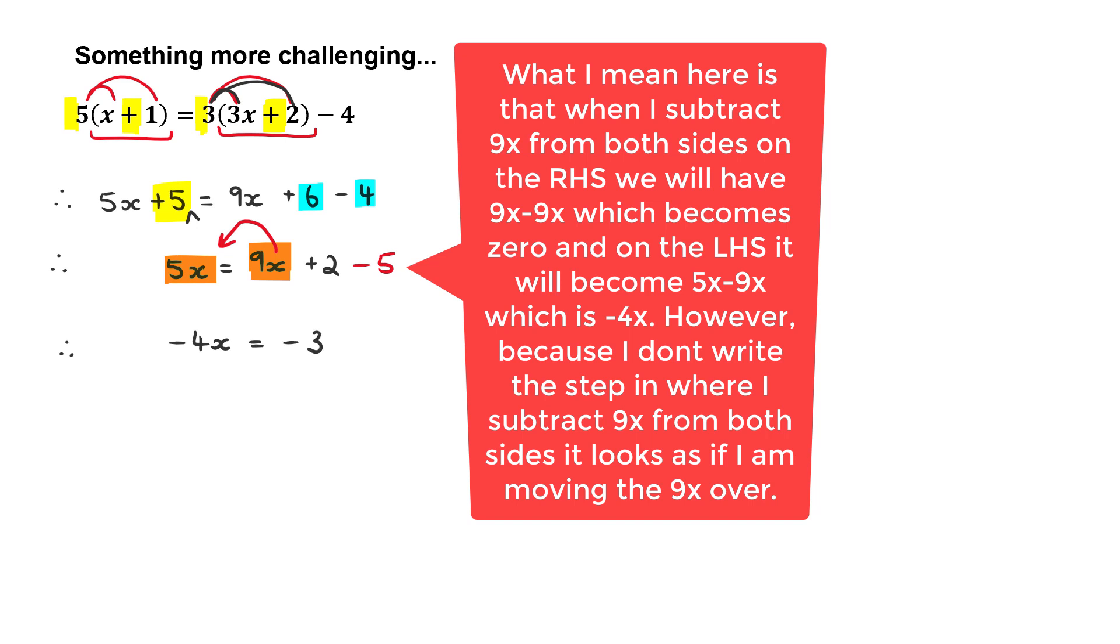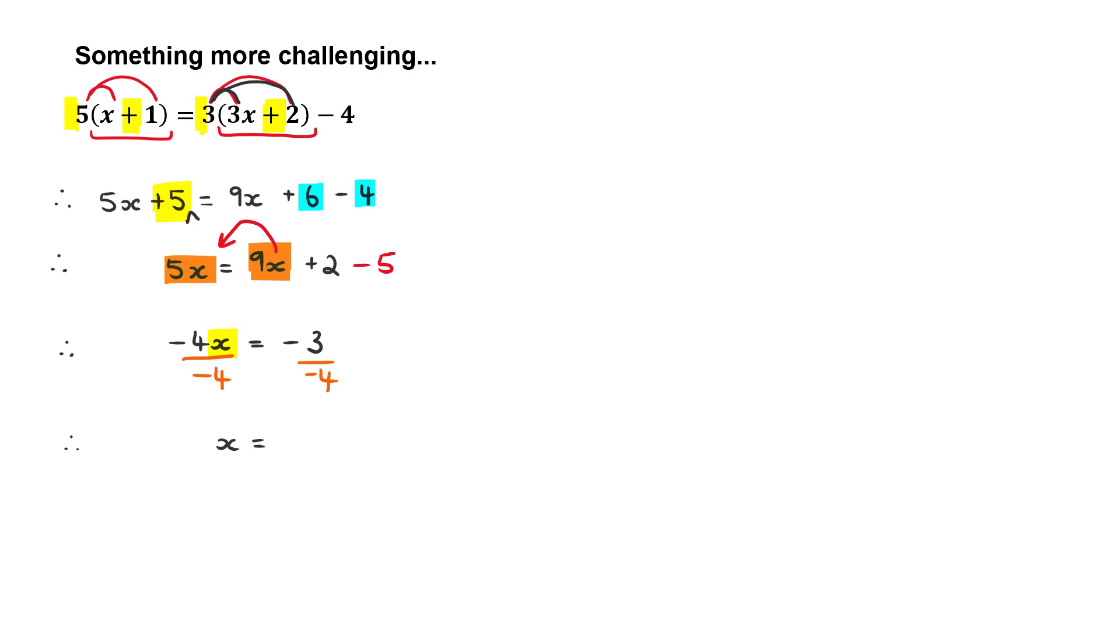Then, we're going to go ahead and divide both sides by minus 4 because I want to get this x here by itself. And that would leave us with x is equal to, we've got 3 over 4 and those negatives over there will cancel. So, our final answer is x is equal to 3 over 4.